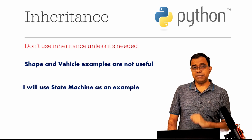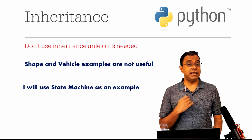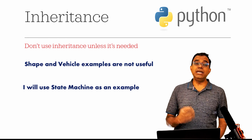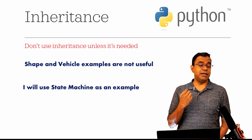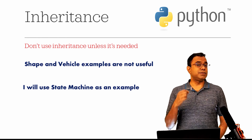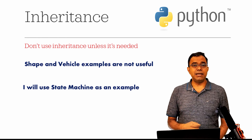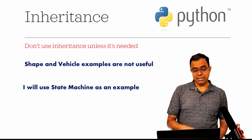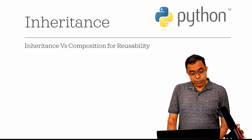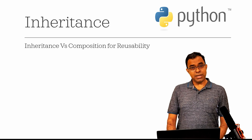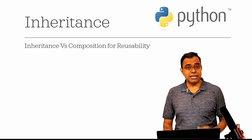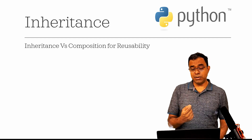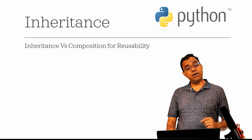Instead, I will give an example of a state machine. I'm going to create multiple states, and since you are creating multiple states you need a base state and you will create derived states. To give a simple example, I am using Happy State and Sad State. I told you earlier not to use inheritance unless it is absolutely required.